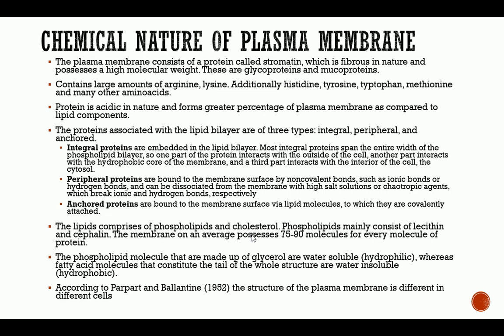The lipids of the membrane comprise phospholipids and cholesterol. Phospholipids mainly consist of lecithin and cephalin. On average, the membrane possesses 75 to 90 molecules of phospholipid for every molecule of protein. The phospholipid molecules made up of glycerol are water soluble, whereas the fatty acid molecules that constitute the tail of the structure are water insoluble.